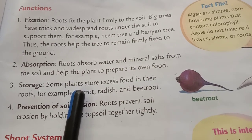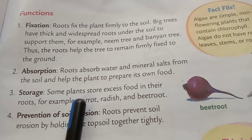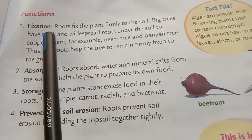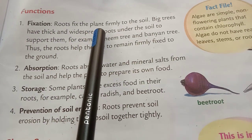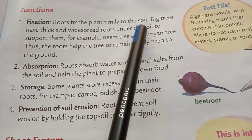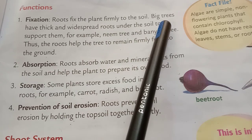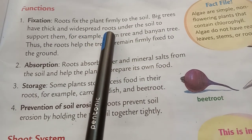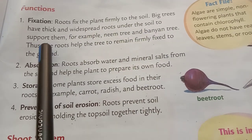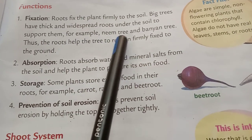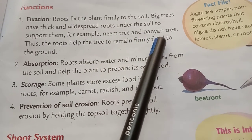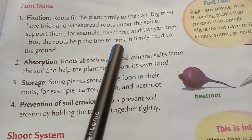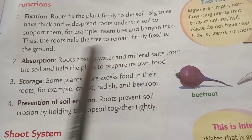What are the functions of the root system? First, fixation. Roots fix the plant firmly to the soil. Big trees have thick and widespread roots under the soil to support them. For example, neem tree and banyan tree. Thus, roots help the tree to remain firmly fixed to the ground.